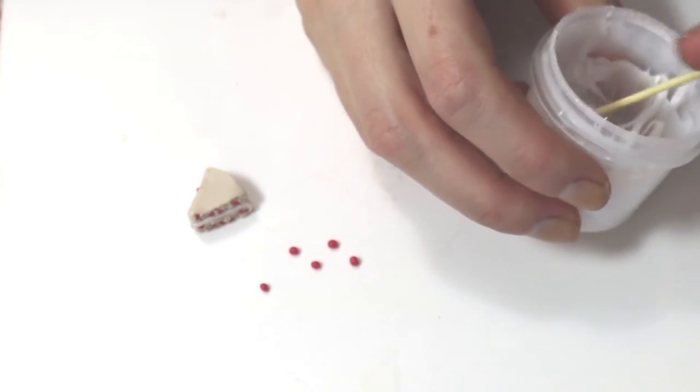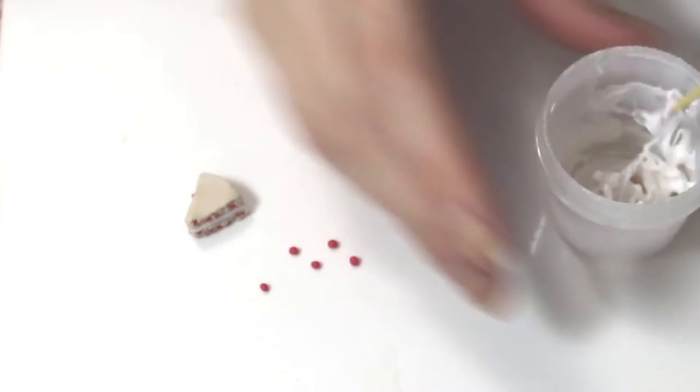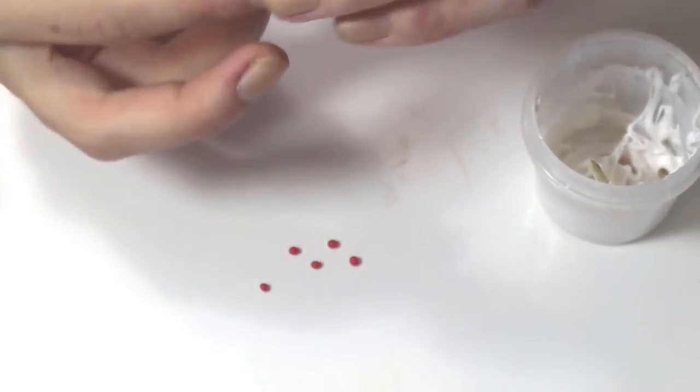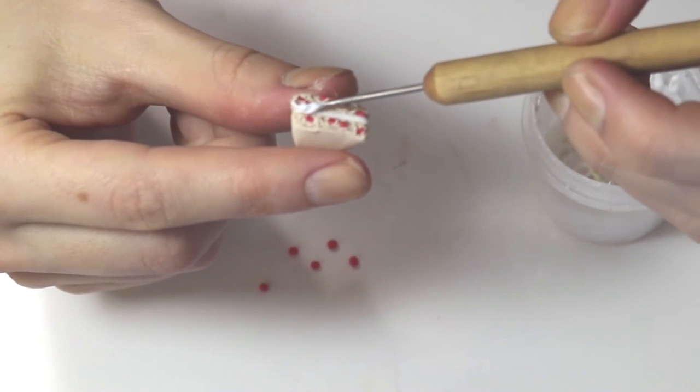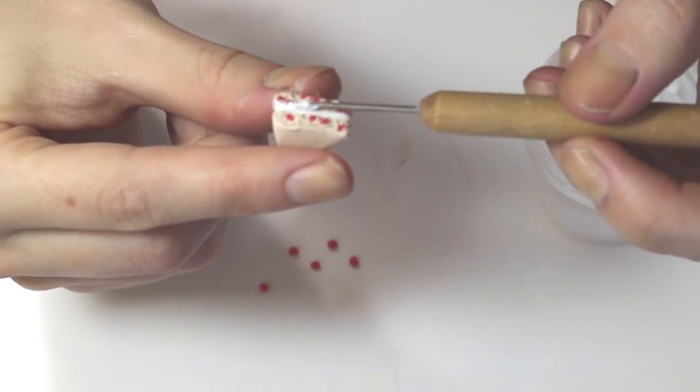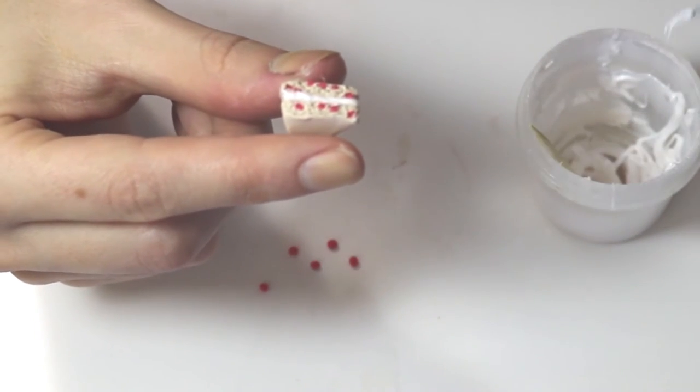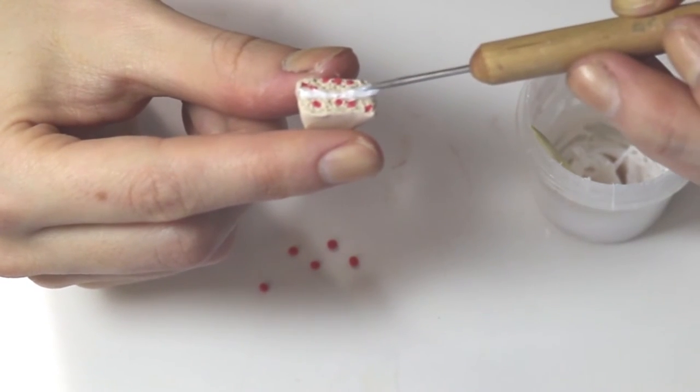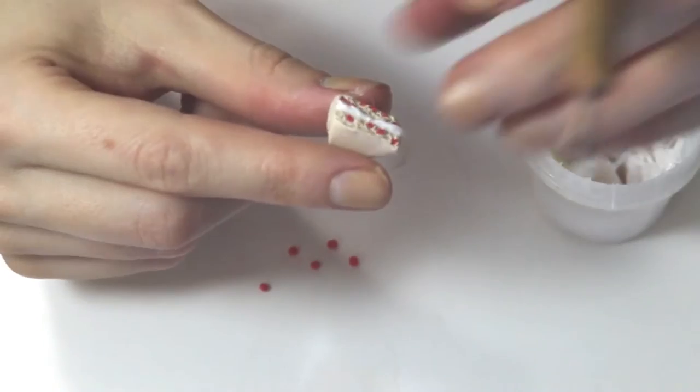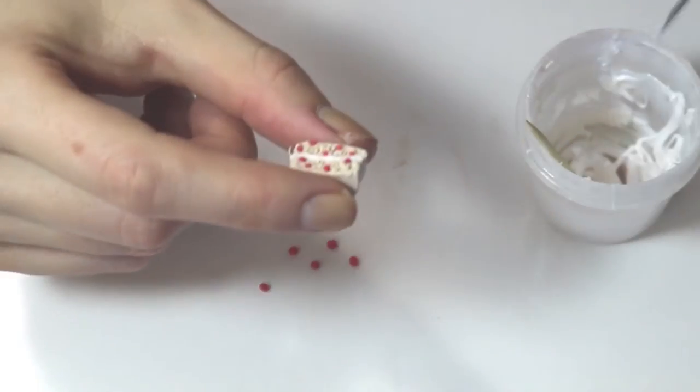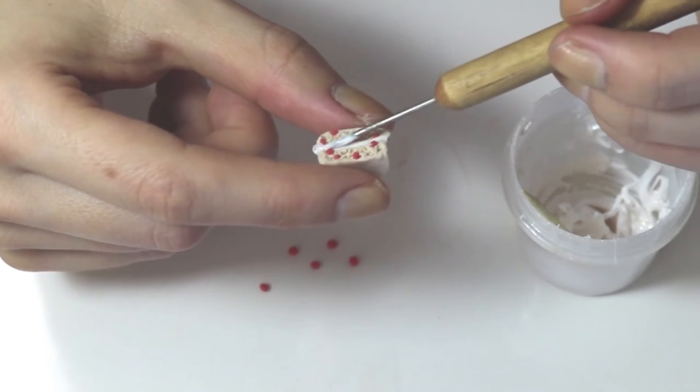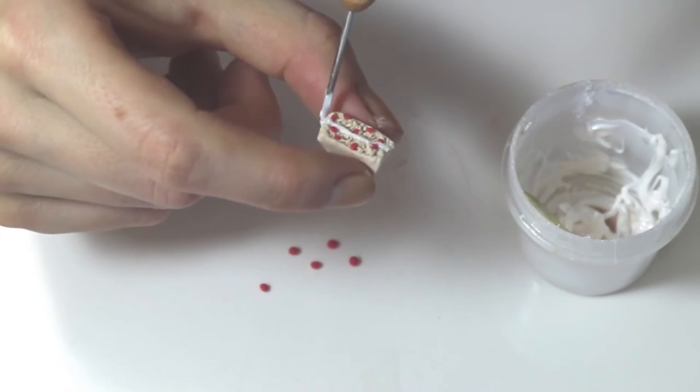We're going to be taking some liquid Fimo that we've already made into icing, and I'll leave a link in the description box below and right in the top right hand corner. So we're going to be adding on some icing where we have added the white. Now this is definitely an optional step. This is just what I like to do to make it look a little bit more realistic.